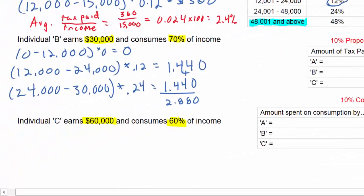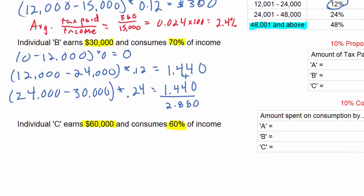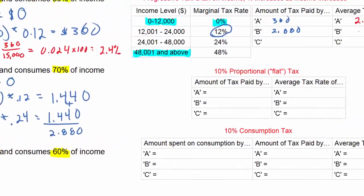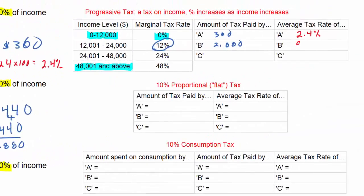So what's the average tax rate of Individual B? To determine it, we divide the amount of tax paid — $2,880 — by his income of $30,000, and that gives us an average tax rate of 9.6%. As you can see, the average tax rate is rising as income rises, but not as quickly as the marginal tax rate, because the marginal tax rate only applies to income earned above a certain level.